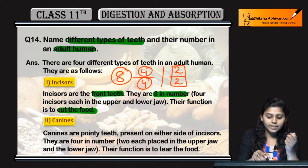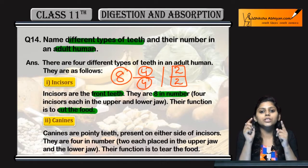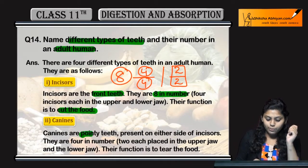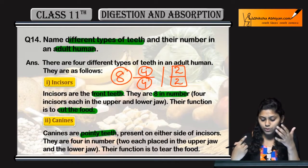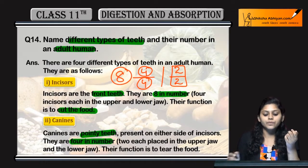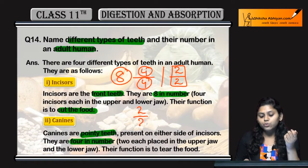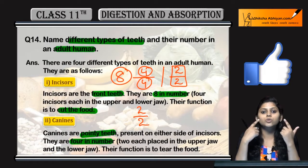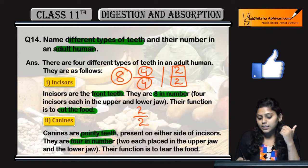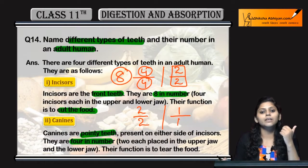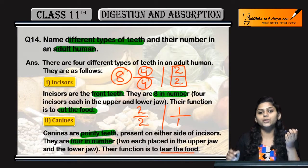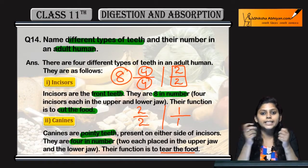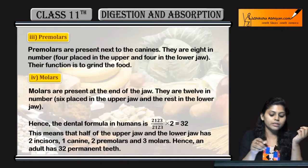Next, coming to the canines. The vampire-like, very pointed teeth are called canines. They are present on two sides and are four in number — two upper and two lower, one on each side of the upper jaw and one on each side of the lower jaw. In the dental formula, canines are one by one. The function of canines is to tear the food.